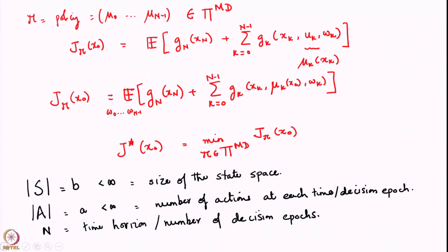This therefore puts a question in front of us: we have posed a problem of Markov decision processes, we saw it has several applications and looked at a clean application in inventory control, but what is actually the way to solve a problem like this? The crux of solving a problem like this - whatever the class of policies, whether Markov deterministic, history dependent deterministic, randomized, or any other - the whole idea is to use what we know about the structure of the problem.